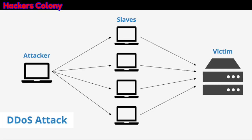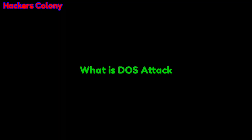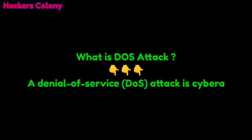Let me show you a short diagram. You can see this is the attacker, and these are the slaves — the traffic that the attacker is sending to the server. There are different types and different ways of DDoS attacks; some can send a little traffic, some can send more. It depends on the tools and the attacker — that's how DDoS attack works.